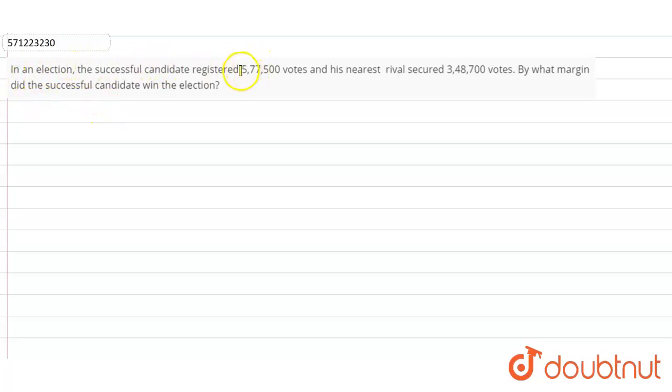the successful candidate registered 577,500 votes and his nearest rival secured 348,700 votes. By what margin did the successful candidate win the election? So to calculate the margin, we have to subtract the smaller number from the larger number.